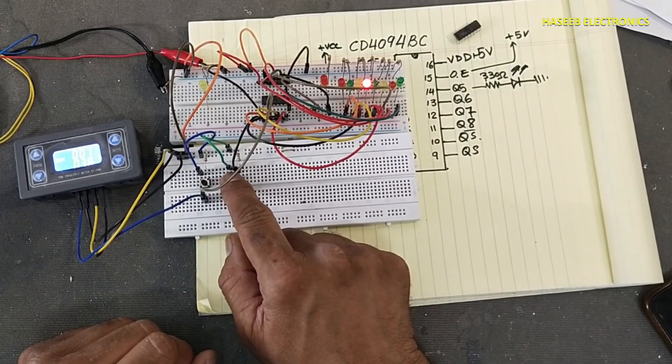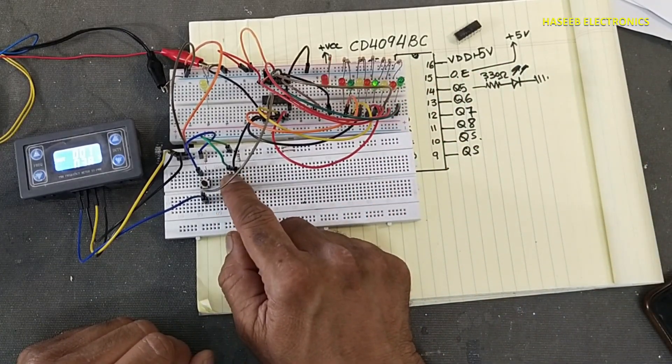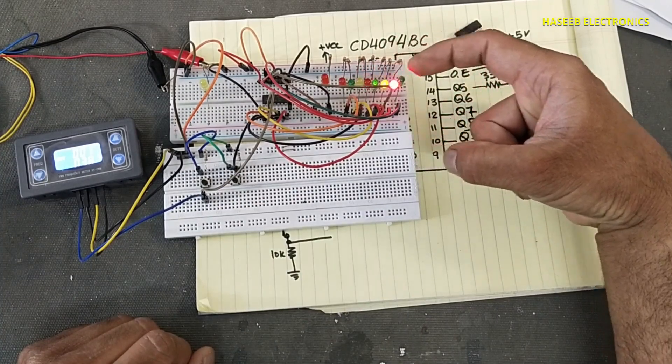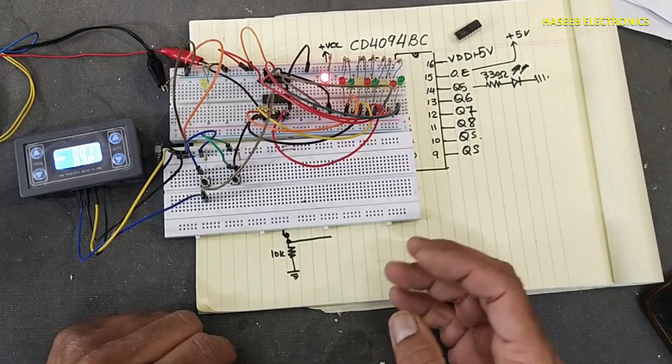If I will inject another data pulse, we can see two data pulses are now moving in the system. Now injected three pulses and three pulses are moving now in the system.